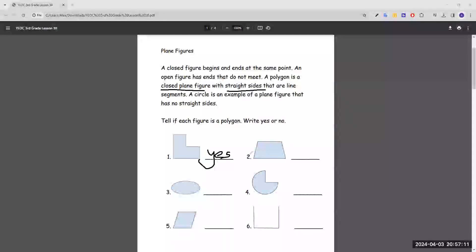Number two is the same thing as number one. It is closed and it does have straight sides. The sides are going diagonally.